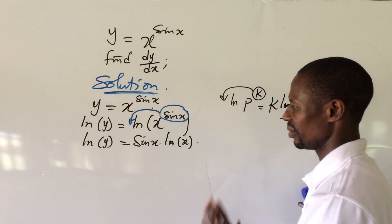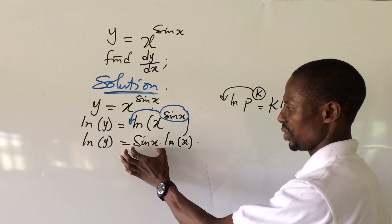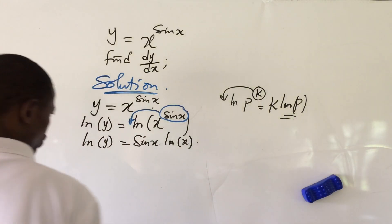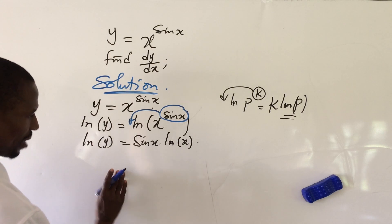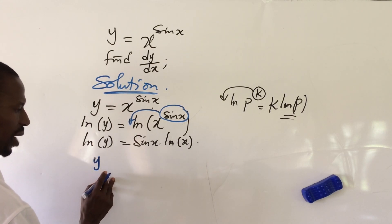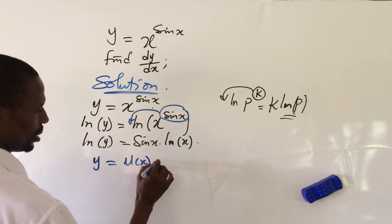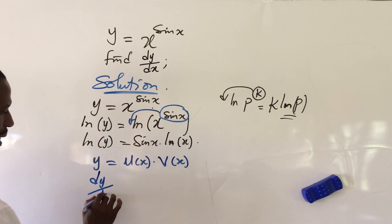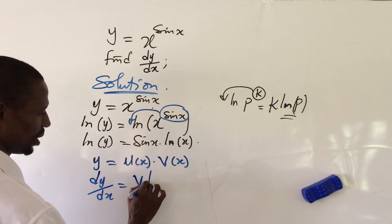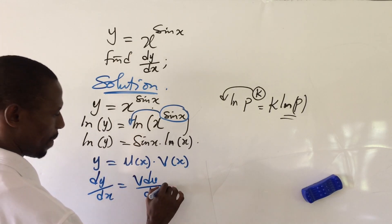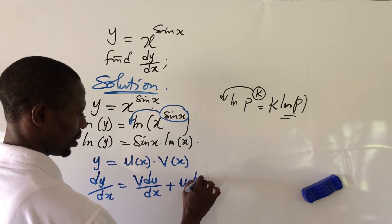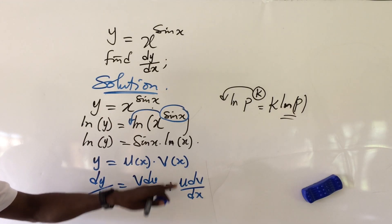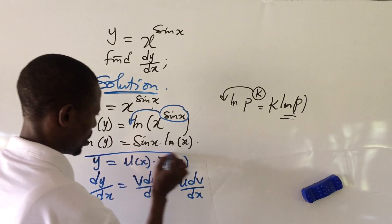Before we differentiate, looking at the right-hand side of the equation we have a product — sin(x) multiplying ln(x). So we apply the product rule of differentiation. The product rule states that if y equals u(x) · v(x), then dy/dx equals v · du/dx plus u · dv/dx.